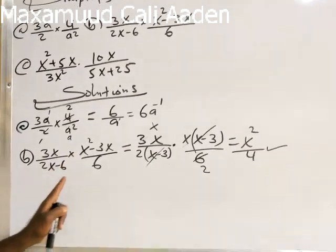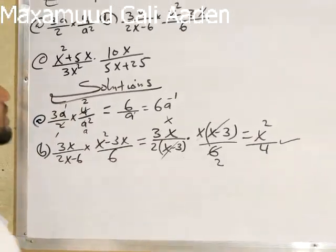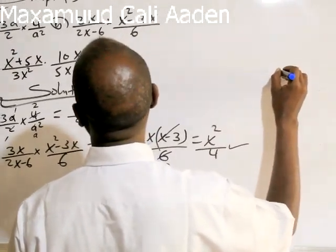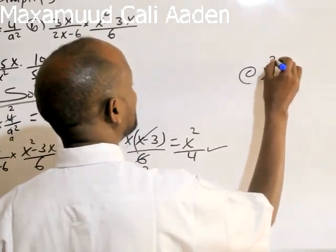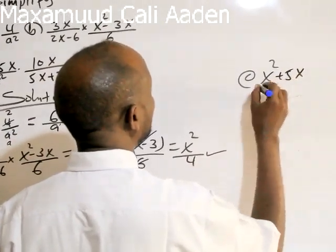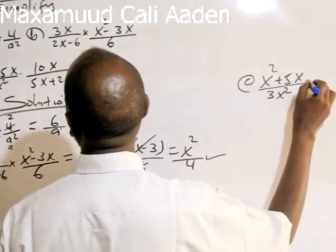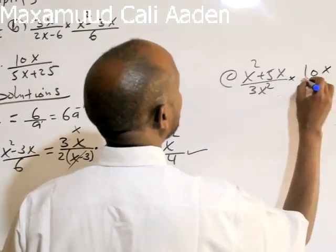The algebraic expression is 4x times 5x, which equals 4x times 5x.